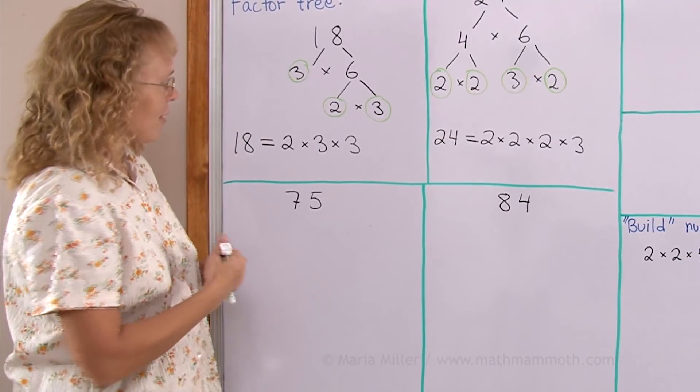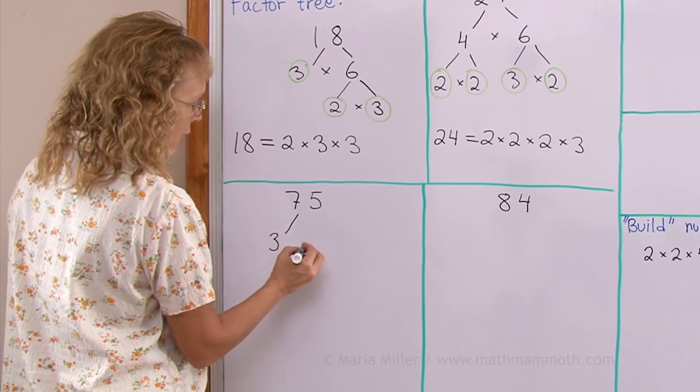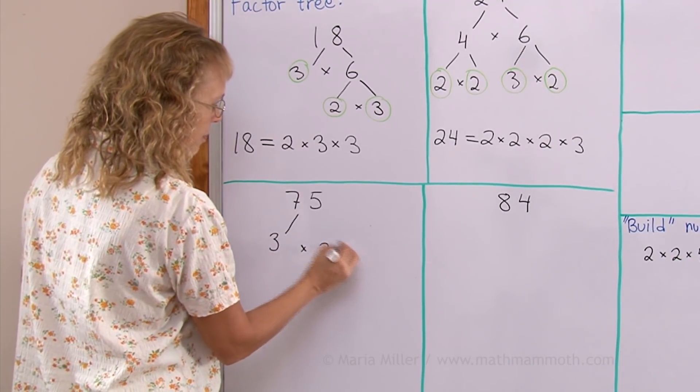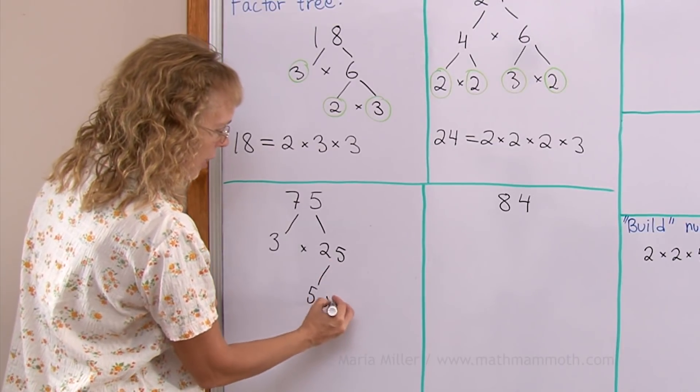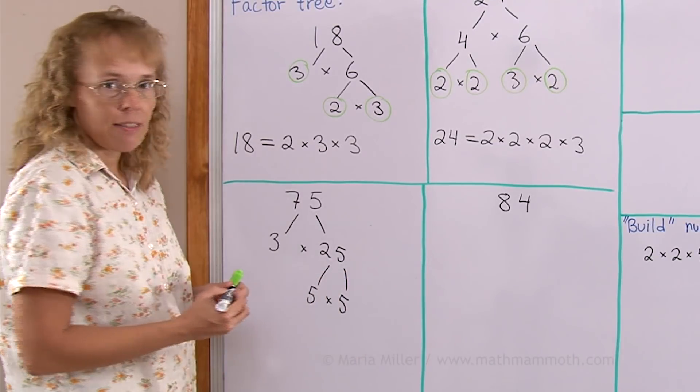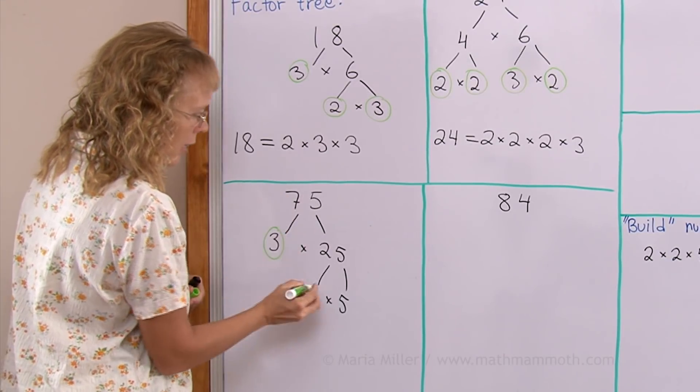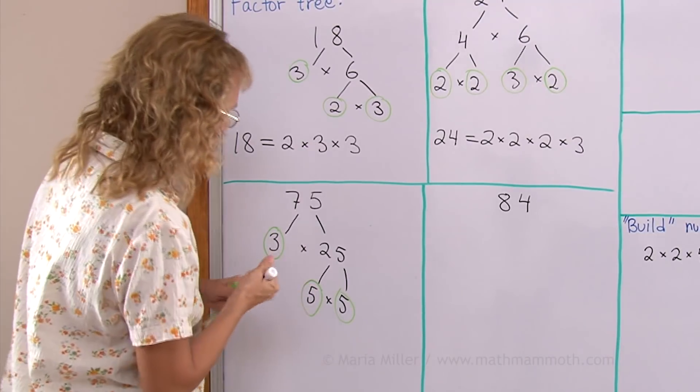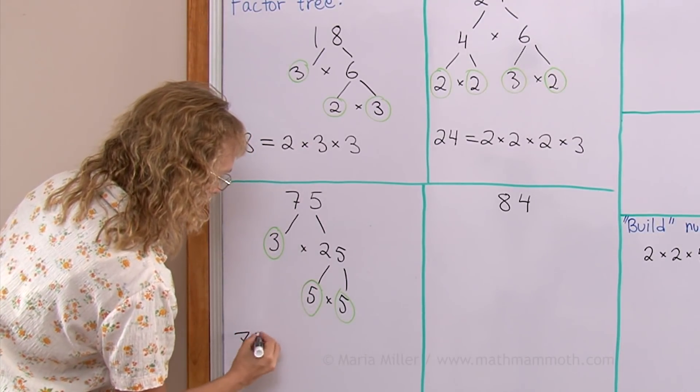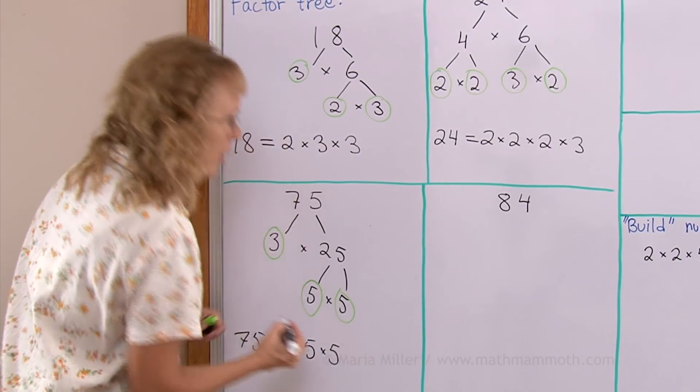Let's try it with 75. What comes to my mind is that it is 3 times 25 for starters. 3 is a prime here. 25 is 5 times 5, and 5 is a prime. So now I have my leaves: 3, 5, and 5. So we get 75, its prime factorization is 3 times 5 times 5.